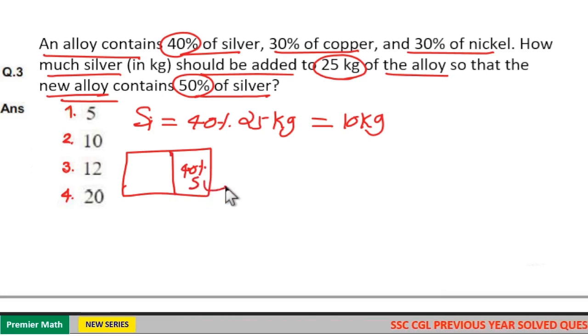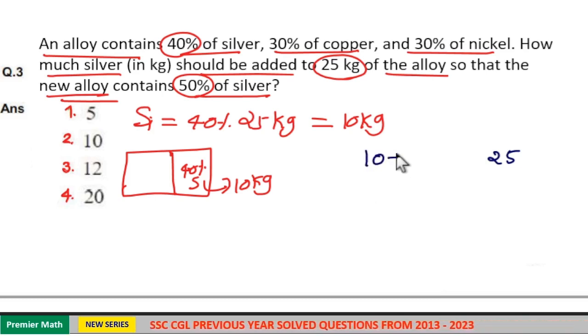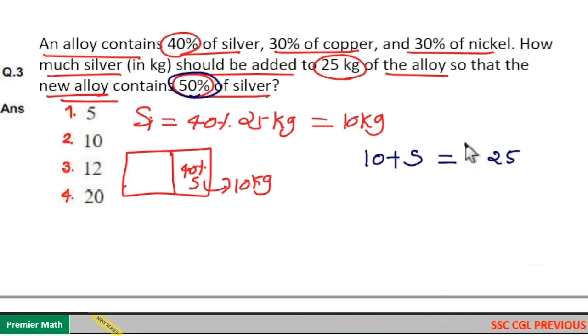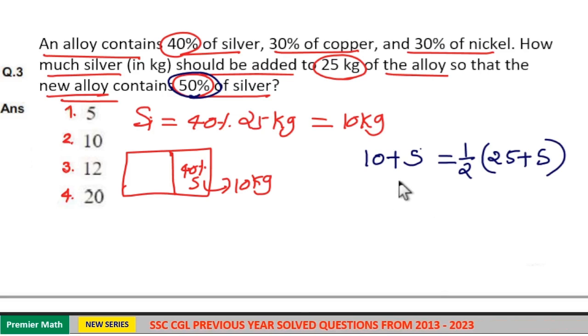Now this 25 kg alloy contains 10 kg silver. So when I add s kg of silver to it, it should become 50% of the new alloy. 50% means half of it, that is 1/2. So when I add s kg of silver, the new alloy weight will become 25 + s.